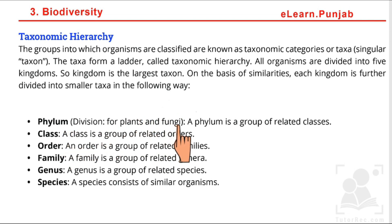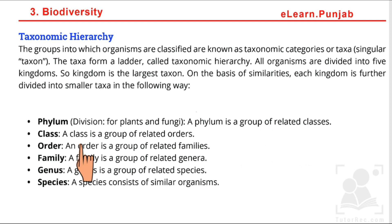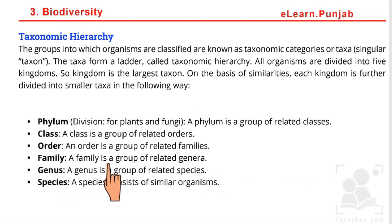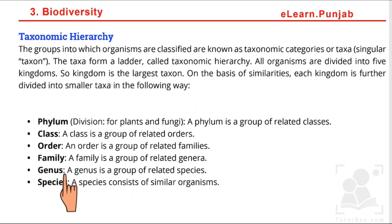The hierarchy levels are: phylum (or division for plants and fungi), which is the group of related classes; class is the group of related orders; order is the group of related families; family is the group of related genera; genus is the group of related species; and species consists of similar organisms. This is the taxonomic hierarchy used to classify all organisms.